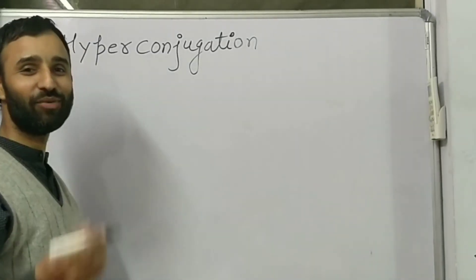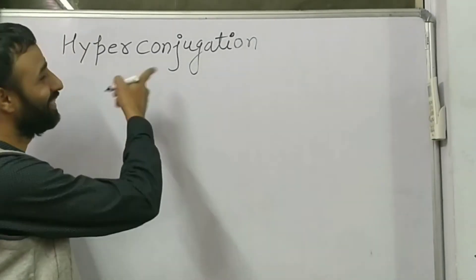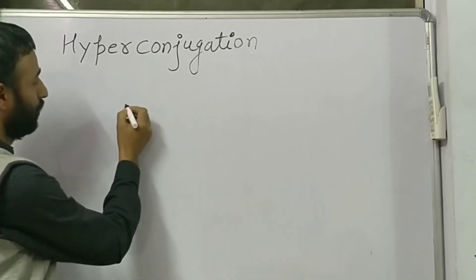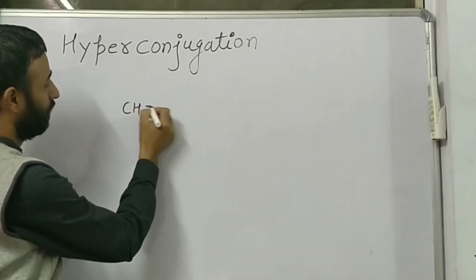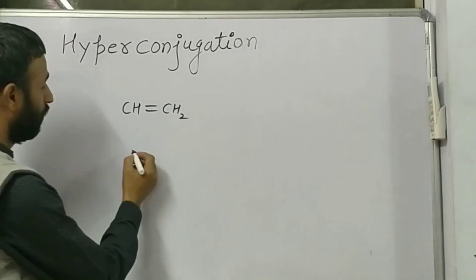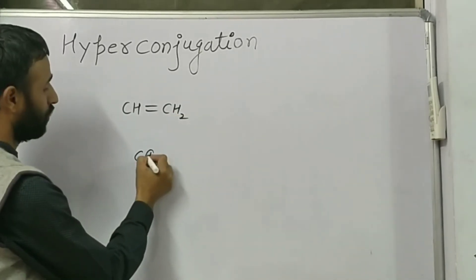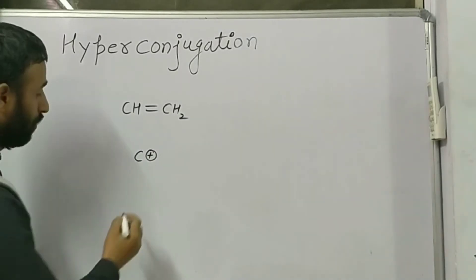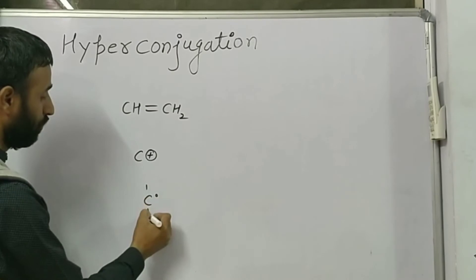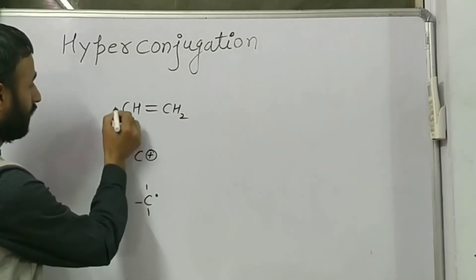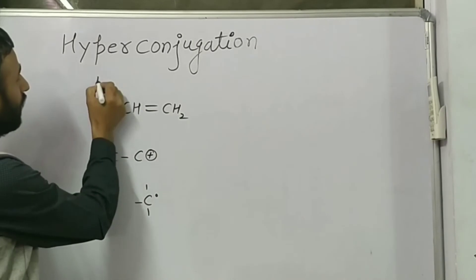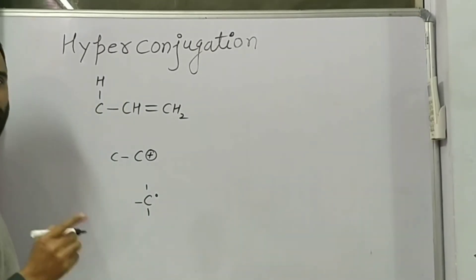Welcome friends. Today we will study hyperconjugation. In hyperconjugation, we should have either a double bond, a positively charged carbon, or a free radical attached to a saturated carbon which is further attached to at least one C-H sigma bond.